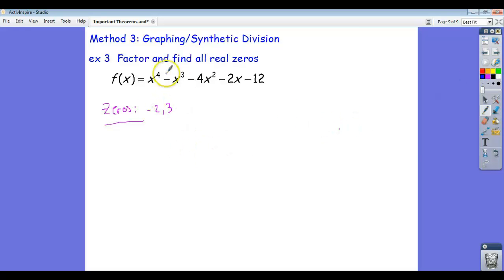Now how do I get the rest? Because there should be four of them. There should be four. Well, I'm going to do synthetic division. I'm going to put the three in the box, one of the zeros. I'm going to write out my coefficients.